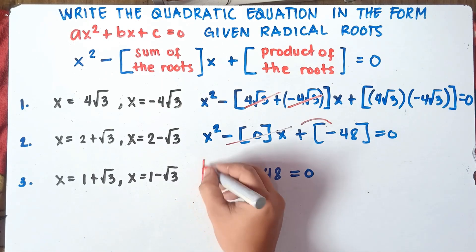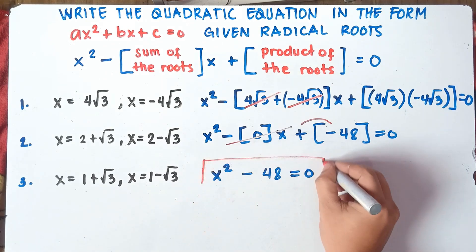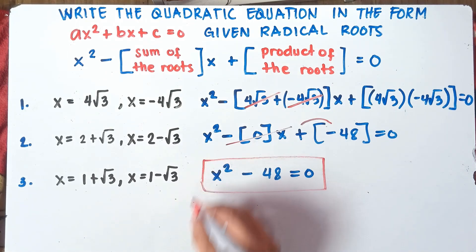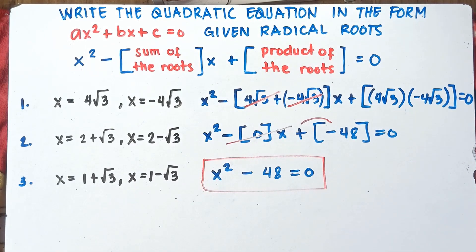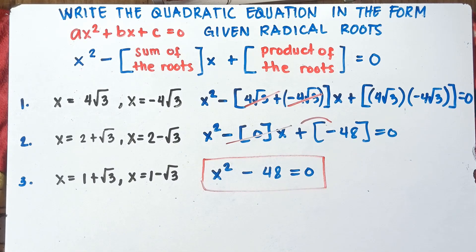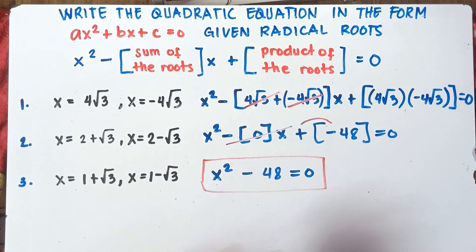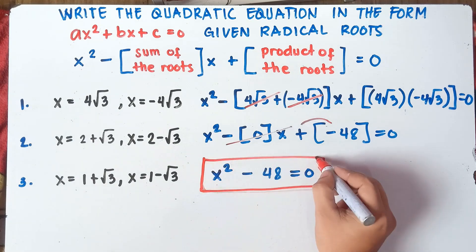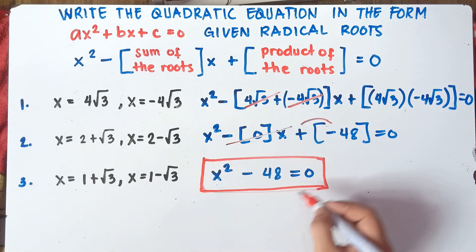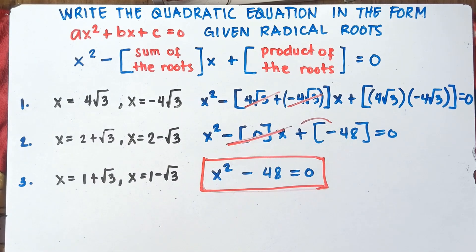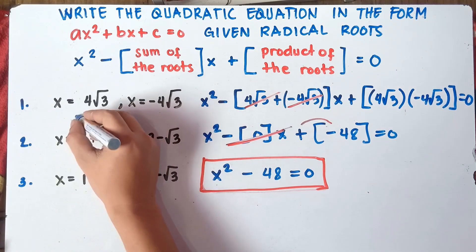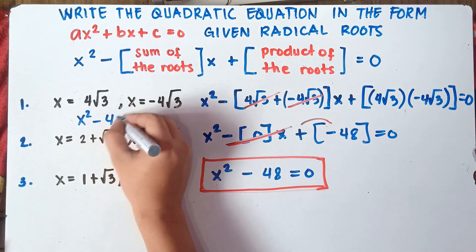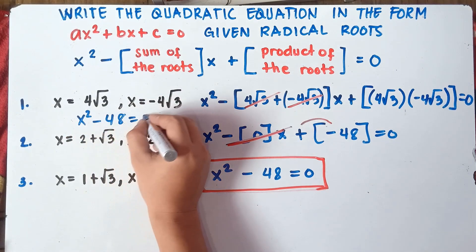That's it class, that's the answer for number 1. Easy, right? So this will be our answer for number 1. Let me box our answer. So x squared minus 48 equals 0. We cancel the middle term. So x squared minus 48 equals 0.